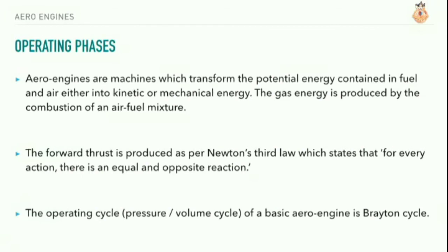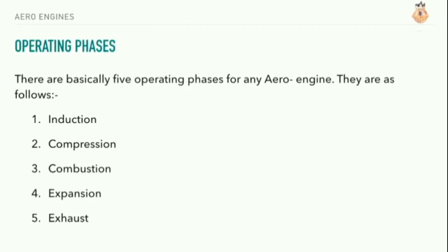Operating phases of aero engine: aero engines are machines which transform the potential energy contained in fuel and air either to kinetic or mechanical energy. The gas energy is produced by the combustion of an air-fuel mixture. The forward thrust is produced as per Newton's third law, which states that for every action there is an equal and opposite reaction. The operating cycle of a basic aero engine is called the Brayton cycle. There are basically five operating phases: induction, compression, combustion, expansion, and exhaust.